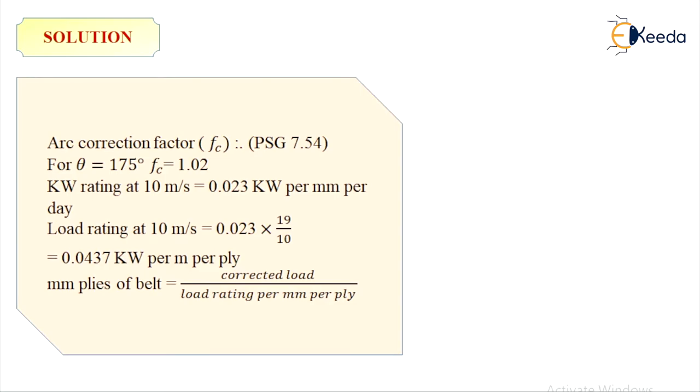Selecting Dunlop high speed belt, kilowatt rating at 10 meter per second is equal to 0.023 kilowatt per mm per ply. Load rating at 10 meter per second is equal to 0.023 multiplied by 19 upon 10, that is 0.0437 kilowatt per mm per ply.